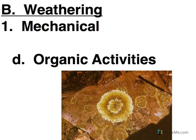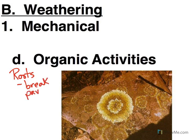Organic activities — this has to do with things like roots, where they break pavement. Well, they can do the same thing to a rock. It can also, like in this case, lichen can interact with the rock and break it apart. But any time there's a place where a root can get in and grow, it's going to break that rock apart.